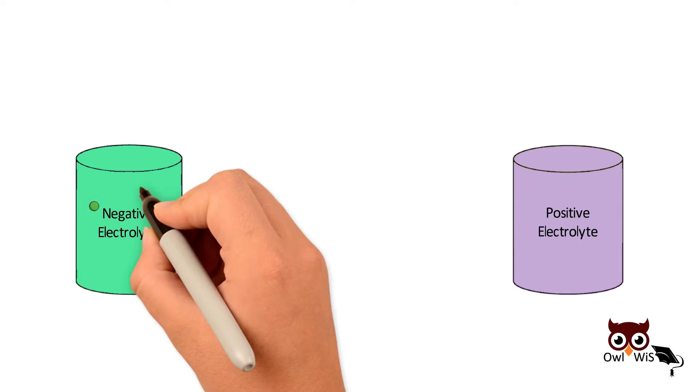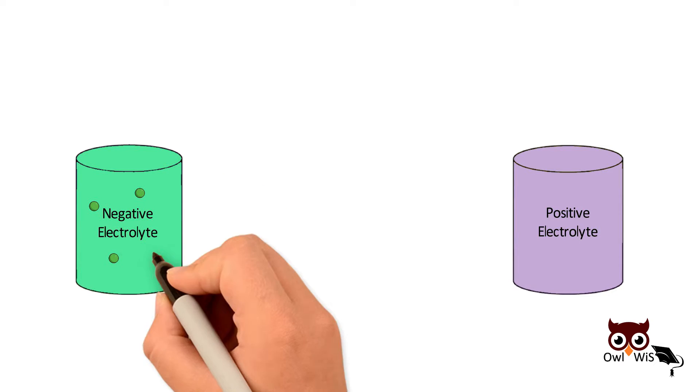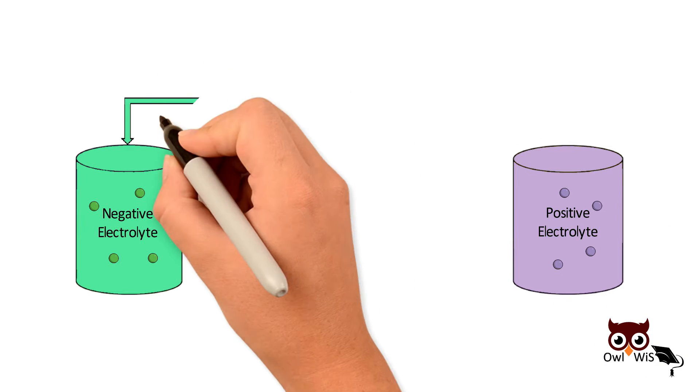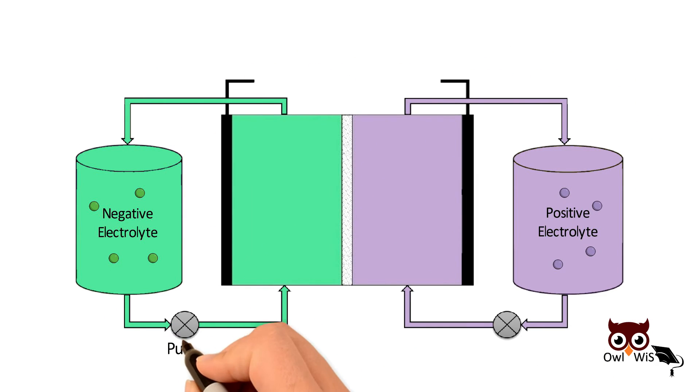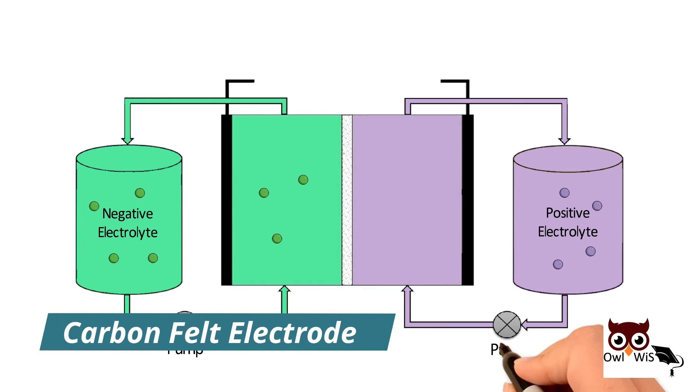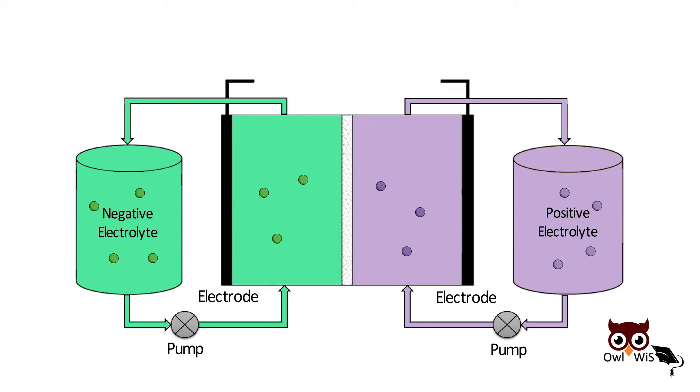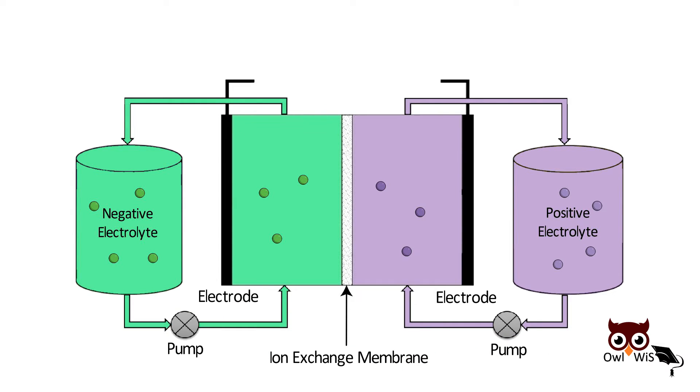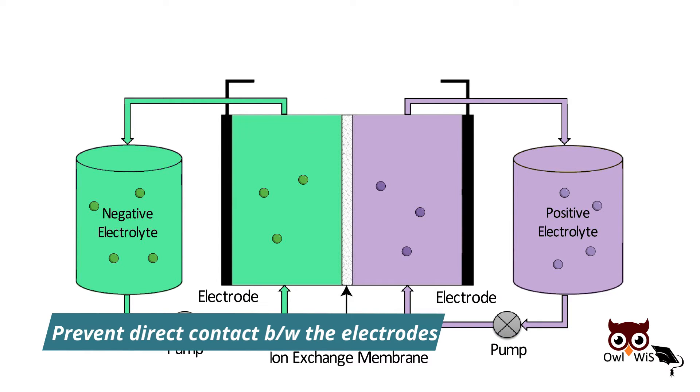Each electrolyte contains dissolved electroactive materials that electrochemically react to release or store electrons. Pumps are used to circulate the two electrolytes through separate carbon-filled electrodes that provide abundant surfaces on which the active species can react. The electrodes are separated by an ion exchange membrane that allows only ions to pass through it and prevent direct contact between the electrodes.